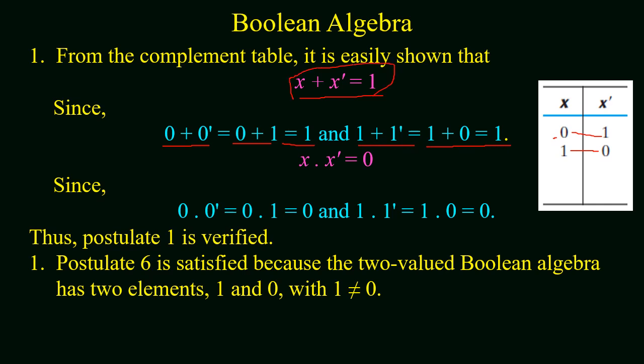In the same manner, we can say that x dot x prime will be equal to 0. If we consider x has a value of 0, then its complement will be equal to 1. Or 0 dot 0 prime will be equal to 0 dot 1, and any number multiplied by 0 gives a value of 0. Or if we consider x has a value of 1, then its complement will be 0. So the relation will be the same and the answer will be 0. So we can conclude that x dot x prime will always be equal to 0.